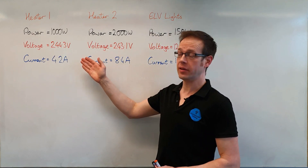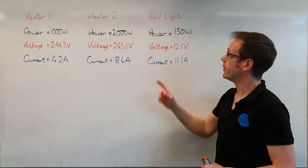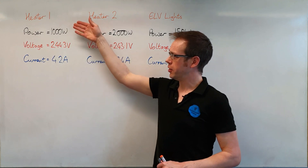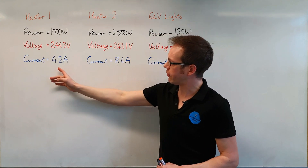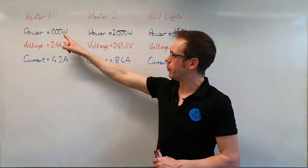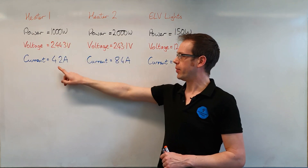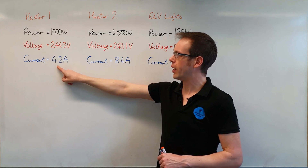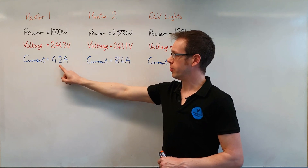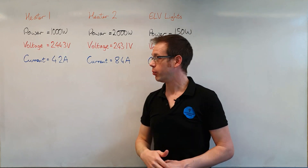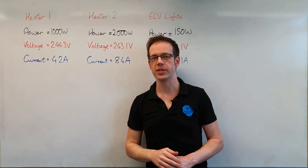So you can see here we've got the values we recorded down in the workshop, clearly laid out on the board — the values for our first heater, our second heater, and our extra low voltage lights. Can you see a relationship between those numbers? If you look at the difference: we doubled the power for our second heater, going from 1000 watts up to 2000 watts, and notice what happened to the current — it went from 4.2 amps to 8.4 amps. So by doubling the power of the heater, we doubled the current flowing to it. There's a clear relationship: if we increase the power, we increase the current that flows, and that's obviously very significant for our electrical design work when we start designing circuits.